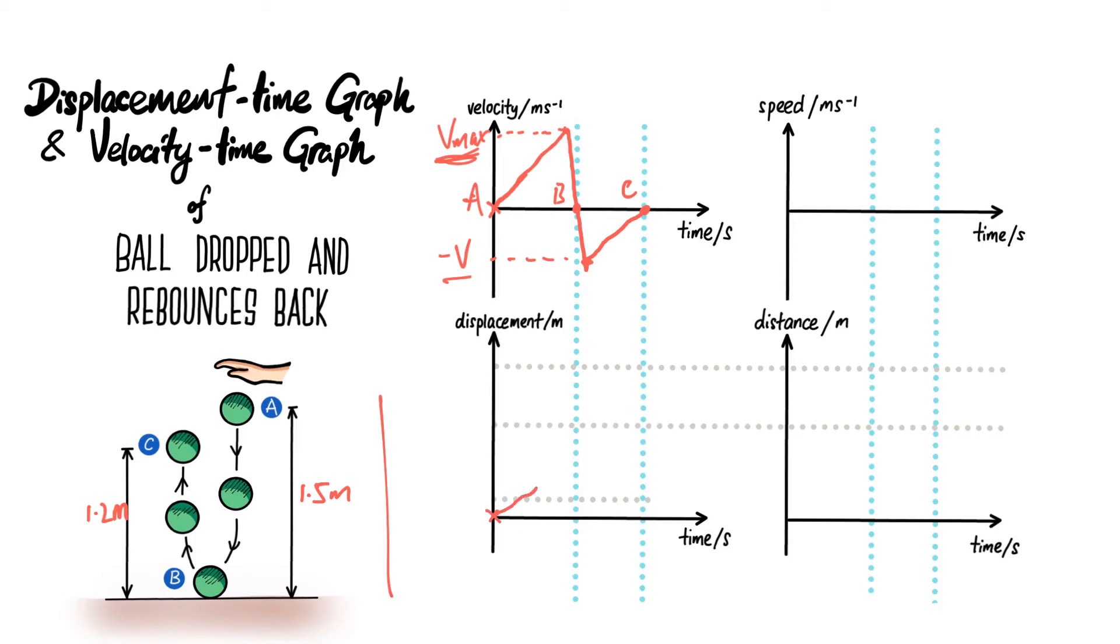...which is the speed, will get steeper and steeper until this point here, and this is the point where the ball touches the ground. There will be a sudden decrease in speed, then after that when it bounces back, the speed decreases, so it's getting less and less steep and going towards its original position. The displacement is getting smaller and smaller, but take note: the displacement will not be zero; it will reach a maximum height of C.